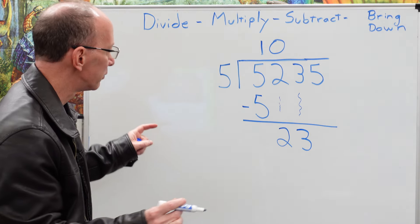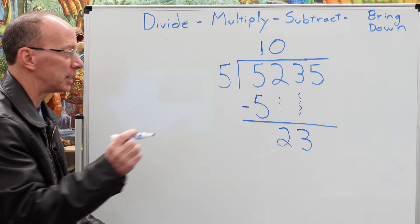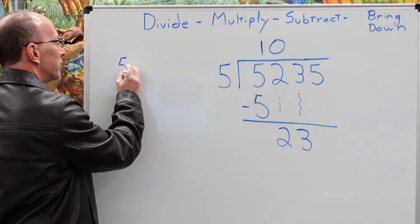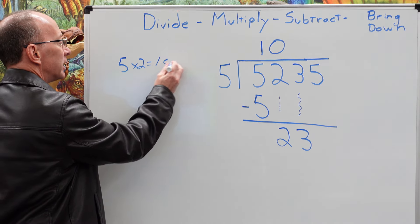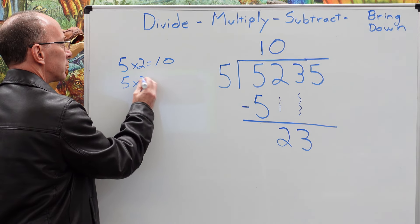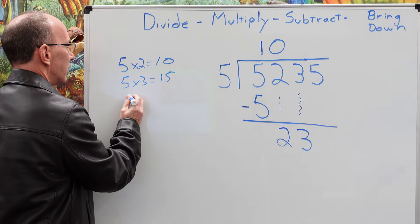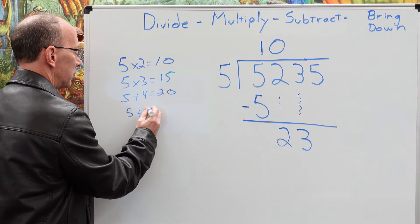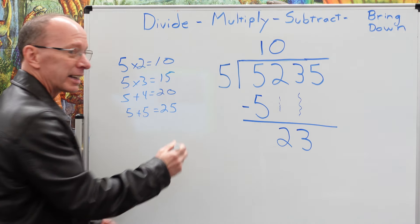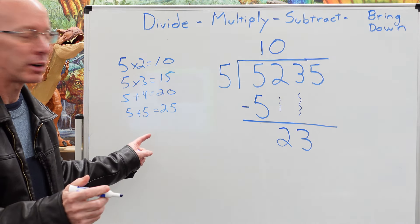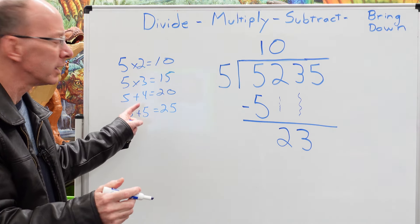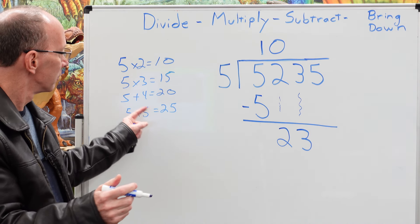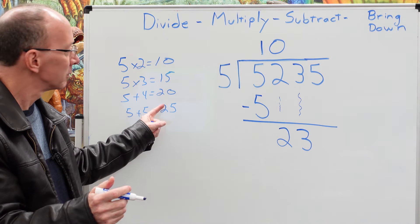Now, here's another trick when you are dividing numbers. Sometimes, if you don't know your multiplication facts very well, sometimes I'll write out some multiplication facts. So I'll do five times two equals ten, five times three equals 15, five times four equals 20, and five times five equals 25. I can keep on going, but this is kind of a nice reference right here to kind of fall back on. And so what number is close to 23, but doesn't go over? Well, right here, five times four equals 20.